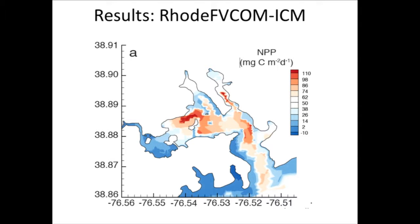This is the results slide. We can look at other processes within the model. This is the average net primary production difference between model runs with photodegradation and without photodegradation. You can see that when we have photodegradation in this wetland system, we get a pretty high increase in net primary production — up to 100 milligrams of carbon per meter squared per day. That is because these wetland systems are inherently light limited, especially when you have lots of nutrients in this typically eutrophied Chesapeake Bay subestuary.